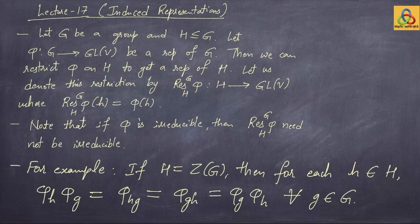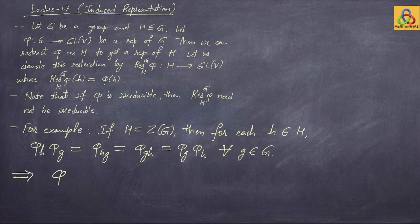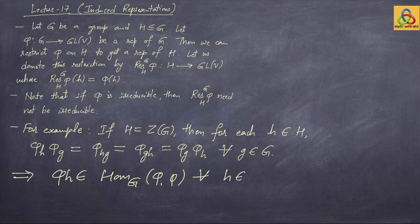This implies that phi sub h is a morphism of the representation phi. So phi sub h belongs to End_G(phi, phi) for all h in H. If phi is irreducible, by Schur's Lemma, phi of h is a scalar multiple of the identity.